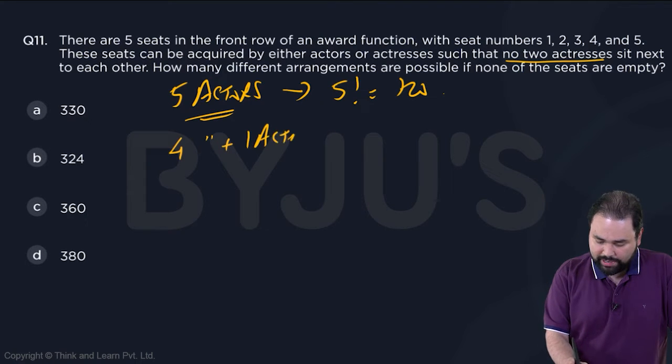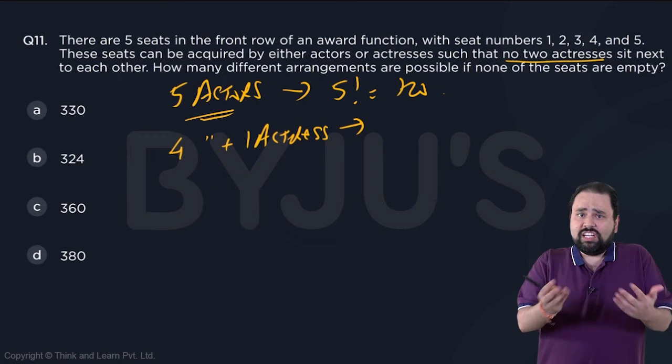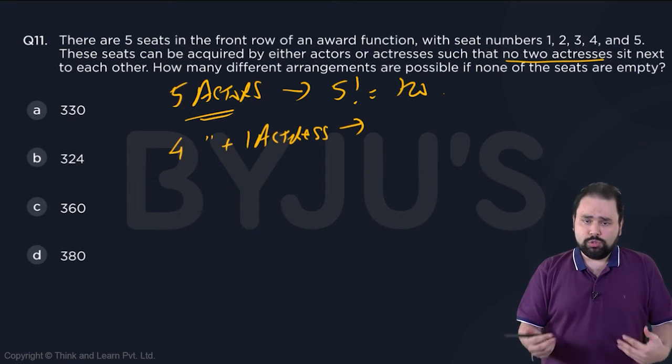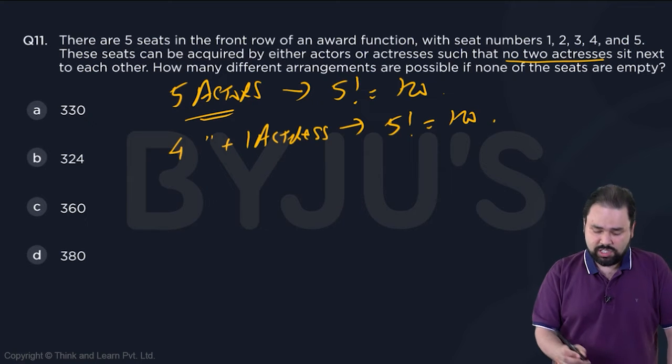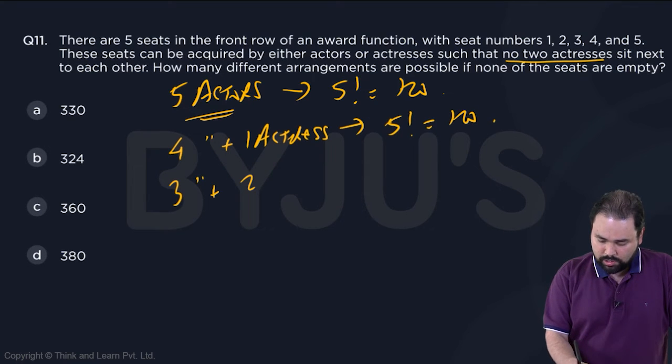Next will be four actors and one actress. Once again, five of them, no problem, no issues. So 5 factorial ways, 120 ways.